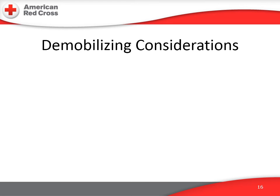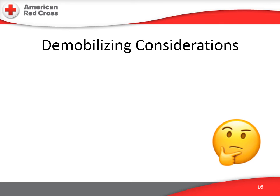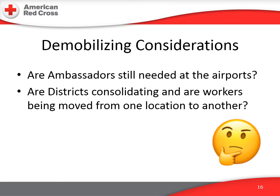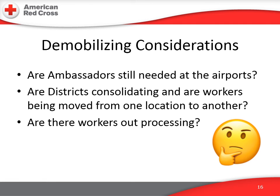There will come a time when the number of staff arriving slows and the operation begins to scale down. Decisions will have to be made on how to demobilize the Ambassador Program. Questions to consider include: Are Ambassadors still needed at airports as volume drops significantly? Are districts consolidating and would Ambassadors help welcome transferring workers? Are there workers out-processing and would it be valuable to have an Ambassador send them off warmly? The Ambassador Lead will need to collaborate with the Staff Services Chief to demobilize the program, and a plan should be in place as soon as it becomes obvious the operation is scaling down.